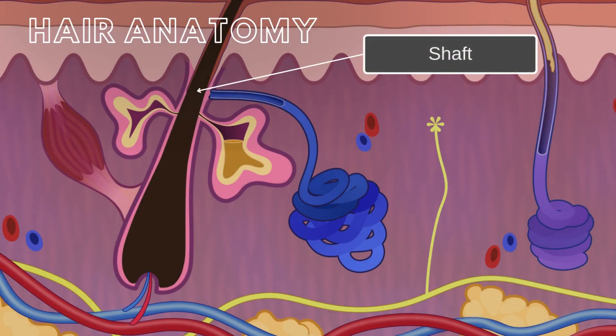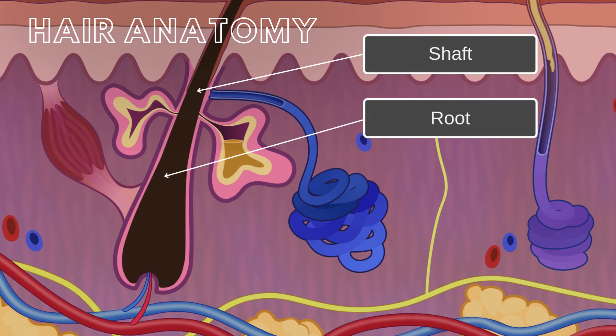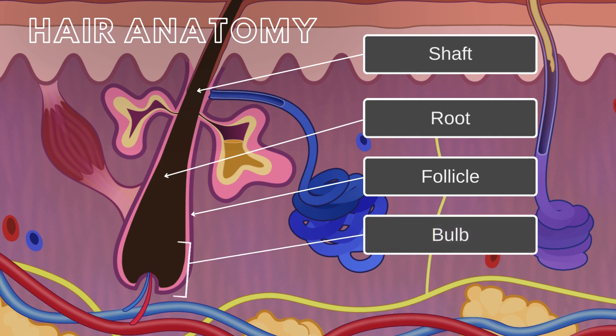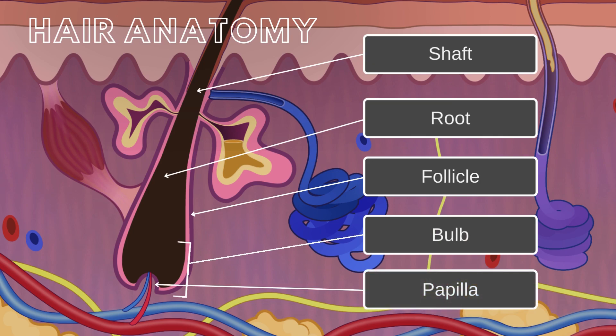Each hair consists of a visible shaft and an embedded root extending into the skin's dermis. The root is surrounded by a follicle, a living structure composed of epidermal and dermal portions. The hair bulb, the root's deepest portion, expands, and the hair papilla supplies blood to the hair. New hair cells continuously form from the stem cells in the hair bulb, pushing older cells out superficially, where they die due to lack of nourishment.